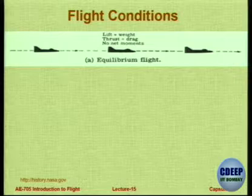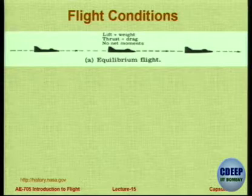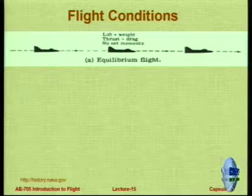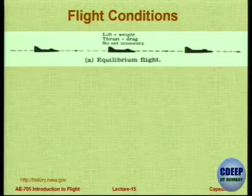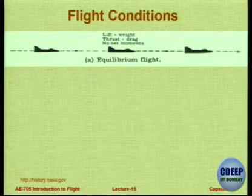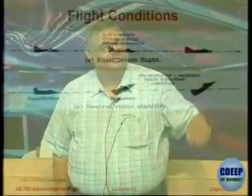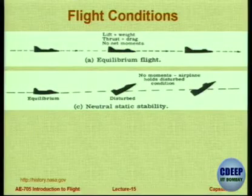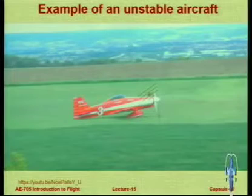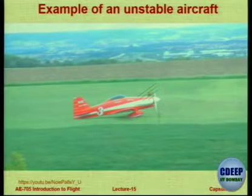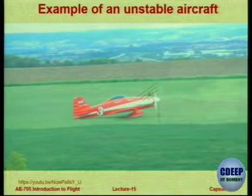In equilibrium flight, the aircraft is at some angle of attack — thrust equals drag, lift equals weight in level flight, no net moment. Now I will give you an example: a small video clip showing the behavior of an unstable aircraft. This is a remotely controlled aircraft; it takes off, goes into nose-up, some disturbance comes — and gone. If this aircraft was statically stable, when the pitch-down moment came it would not have just gone down.